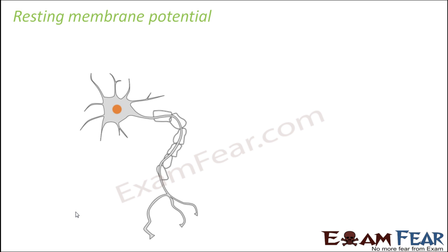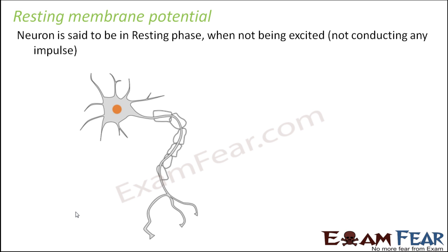Let us talk about the resting membrane potential. Even when the neuron is resting — that is, the neuron is not doing any work — there is a potential difference which exists across the neuron, and that is known as the resting membrane potential. The question is: when is the neuron said to be in resting phase?